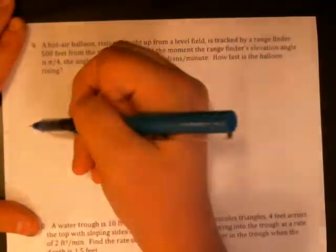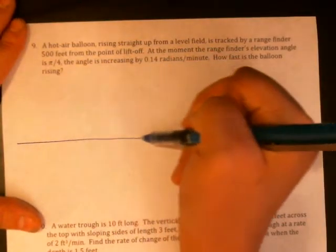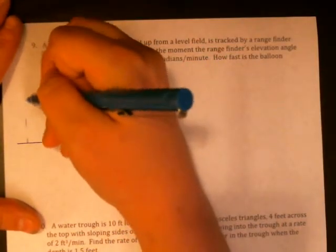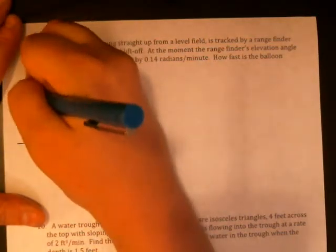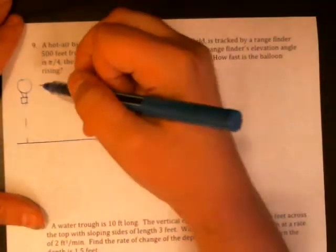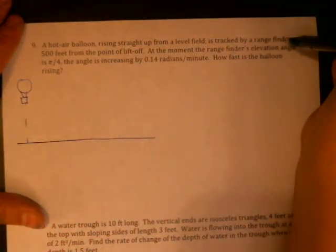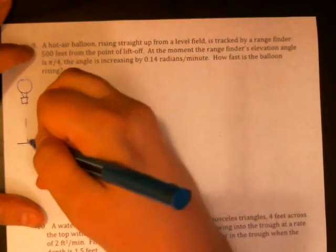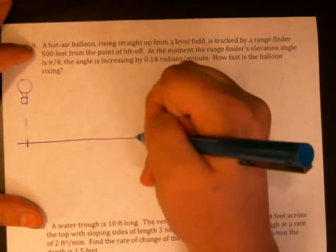Hi, everyone. In this problem, we have a hot air balloon that's rising straight up from a level field. So let's say this is our field, and our hot air balloon is rising up. And it's being tracked by a rangefinder that's 500 feet from the point of lift-off. So here's where it lifted off.